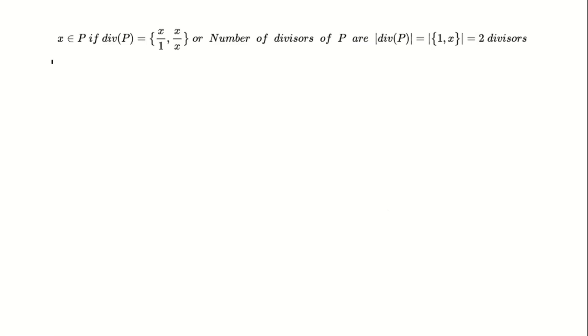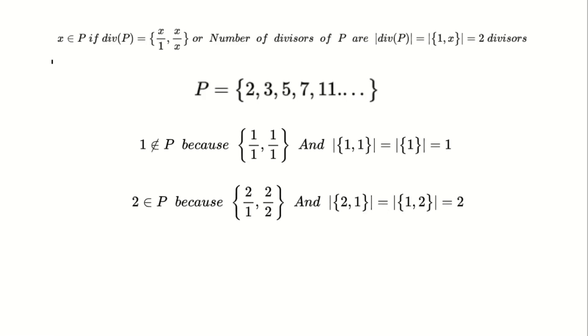For example, the number one is not a prime number because it has only one divisor, which is itself. The number two, however, is a prime because it has two divisors, one and two. Similarly, the number three is a prime number because its only divisors are one and three.